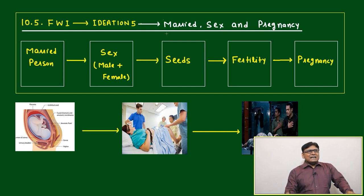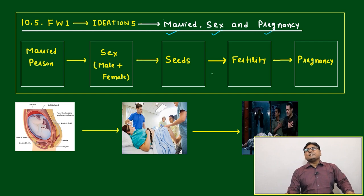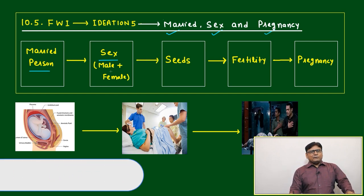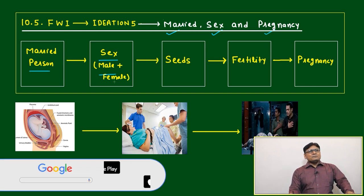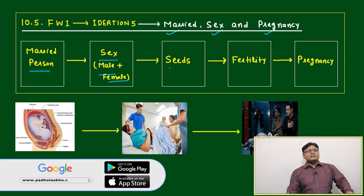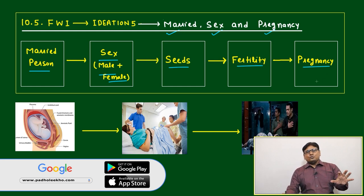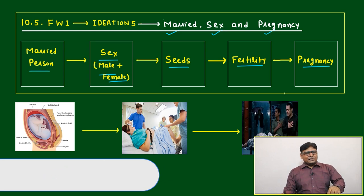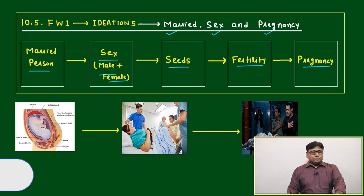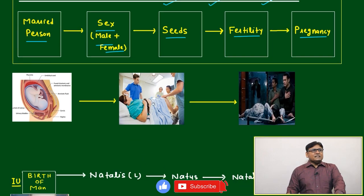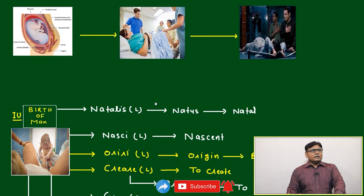We have discussed in Iodation 5 about marriage, sex and pregnancy — married person, after marriage, sex, male and female, seeds, fertility, pregnancy. We have understood and gone in depth till pregnancy. Now in this framework we'll just move forward after pregnancy.